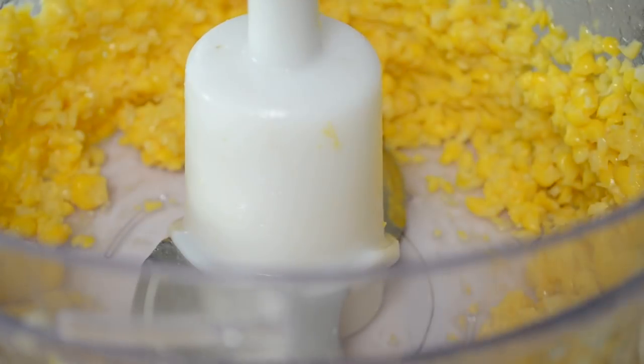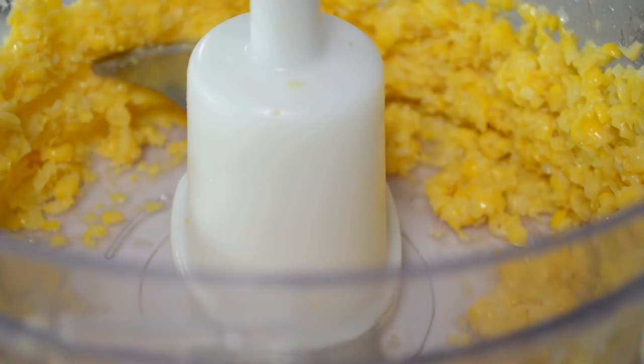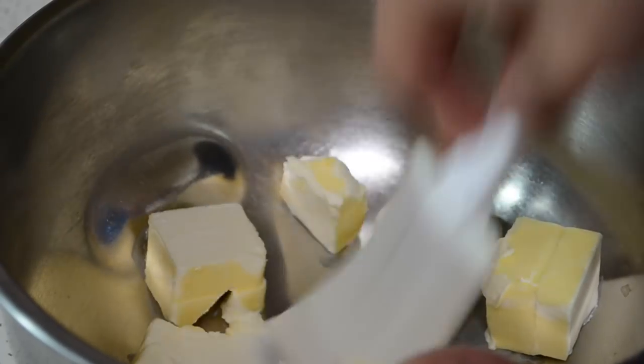Now we're gonna throw it in a food processor, we're gonna blitz it. You don't want this to be mushy, but you don't want the kernels to be too big either. Just give it a pulse, check it, give it a pulse, and that was perfect.